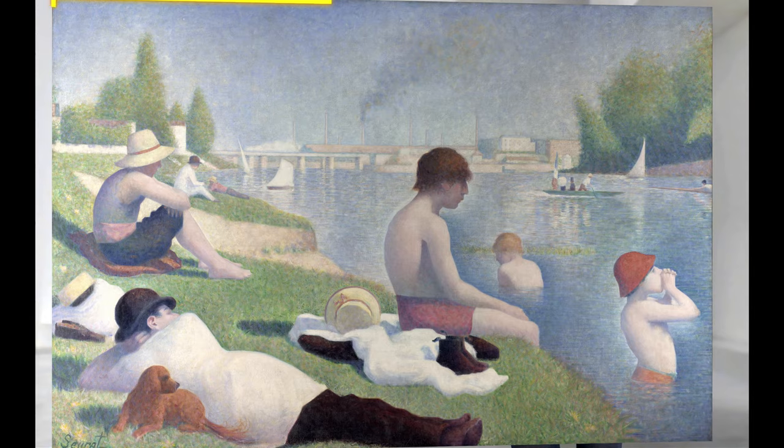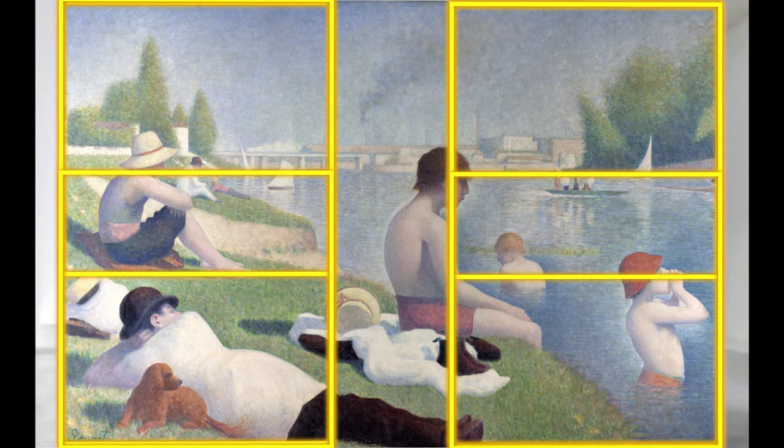Artists like George Seurat knew the power of the Fibonacci sequence, and is said to have, quote, attacked every canvas by the golden section, as he did here in his classic Bathers at Aznir.